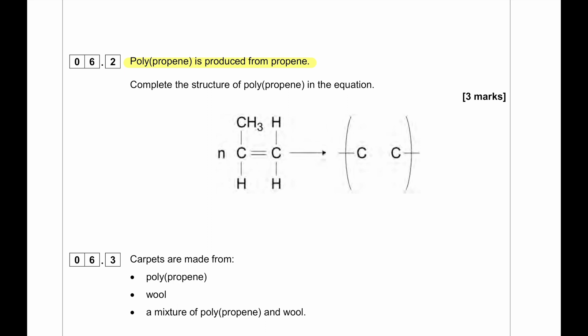Polypropene is produced from propene. Complete the structure of polypropene in the equation. To complete the structure, the double bond must be broken. So we're going to give a single bond between the carbon and the rest of the molecule we're going to draw as it is.